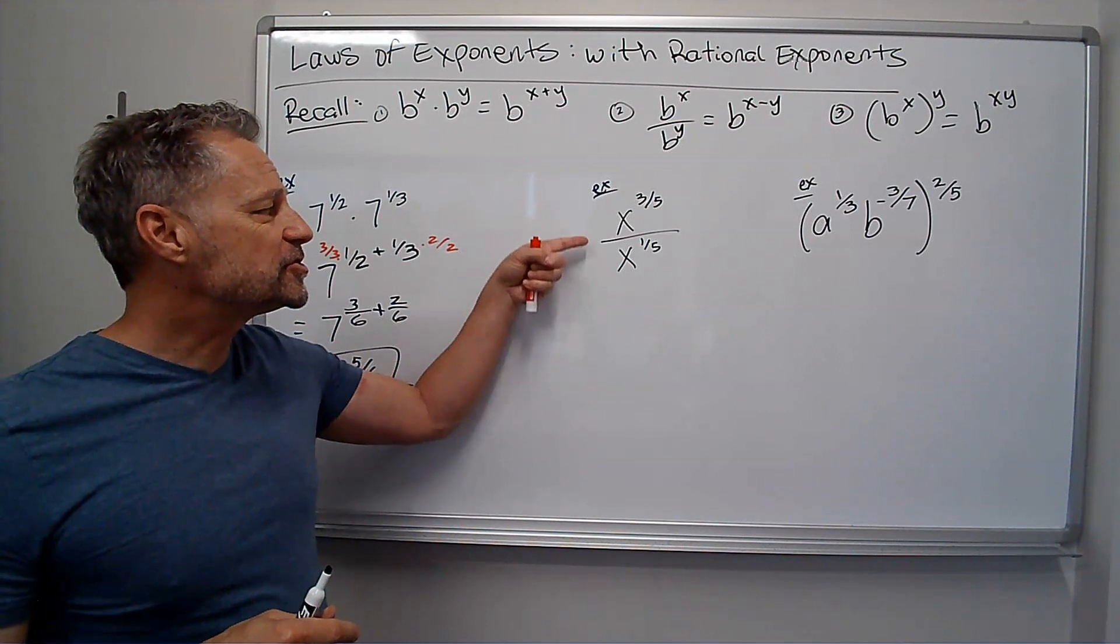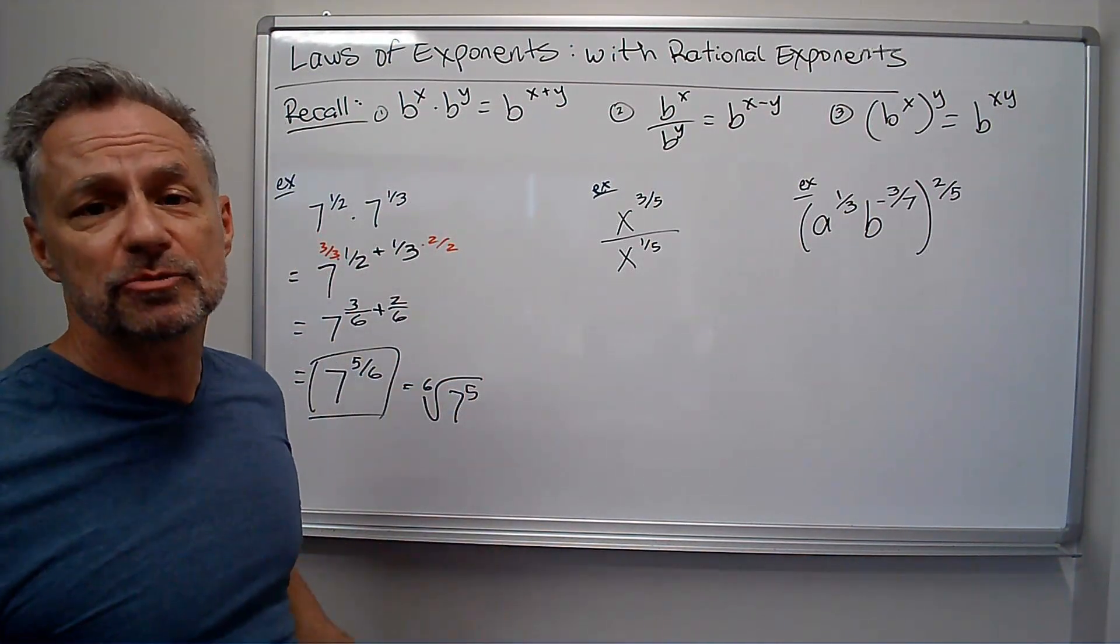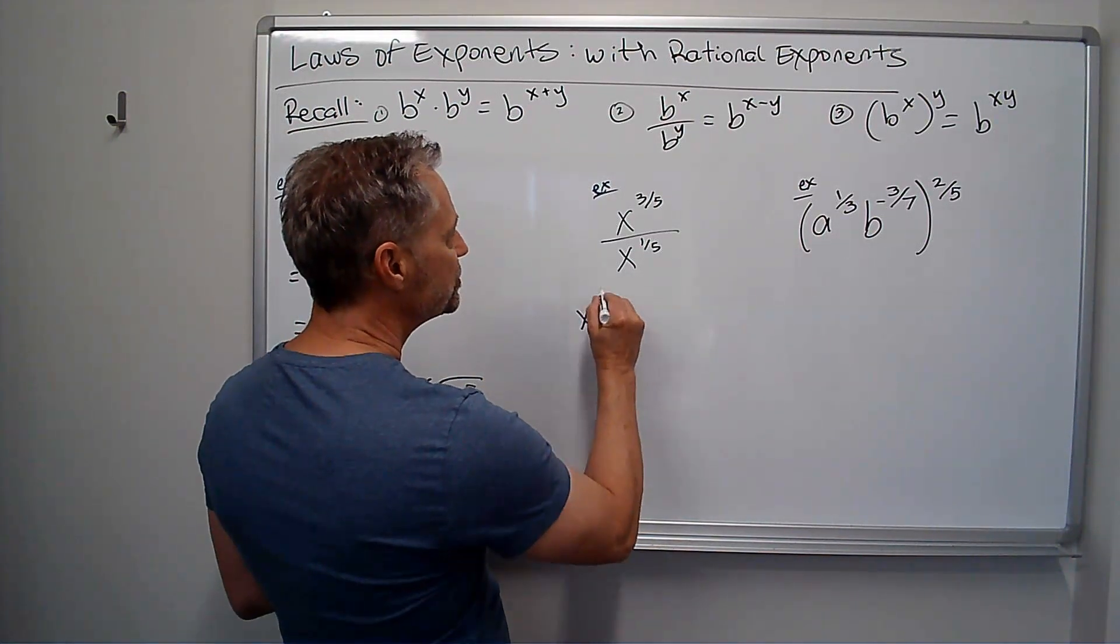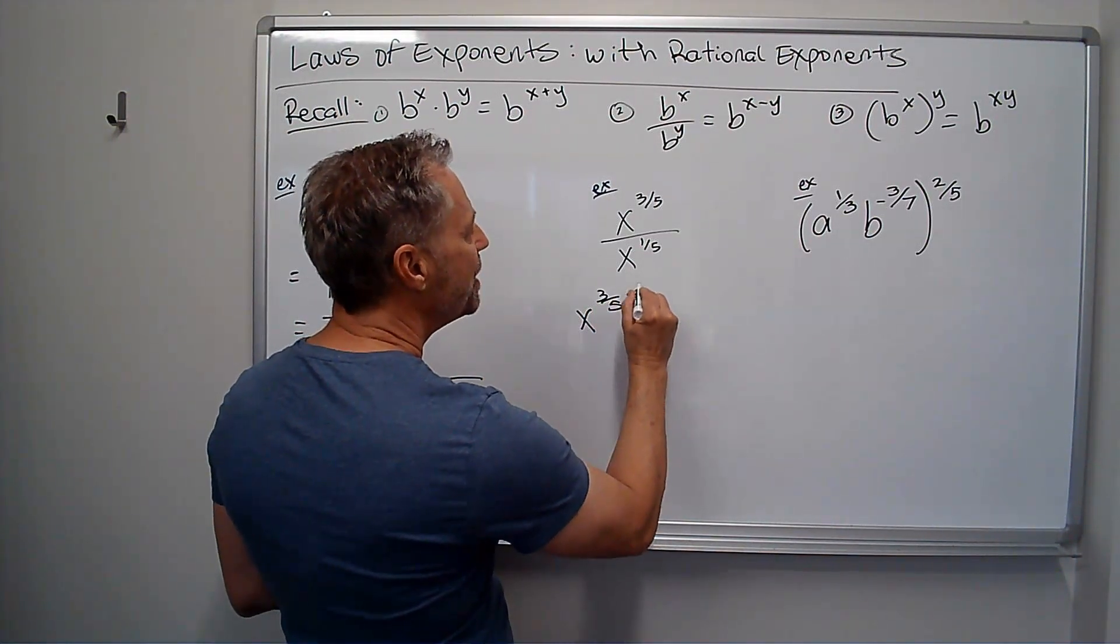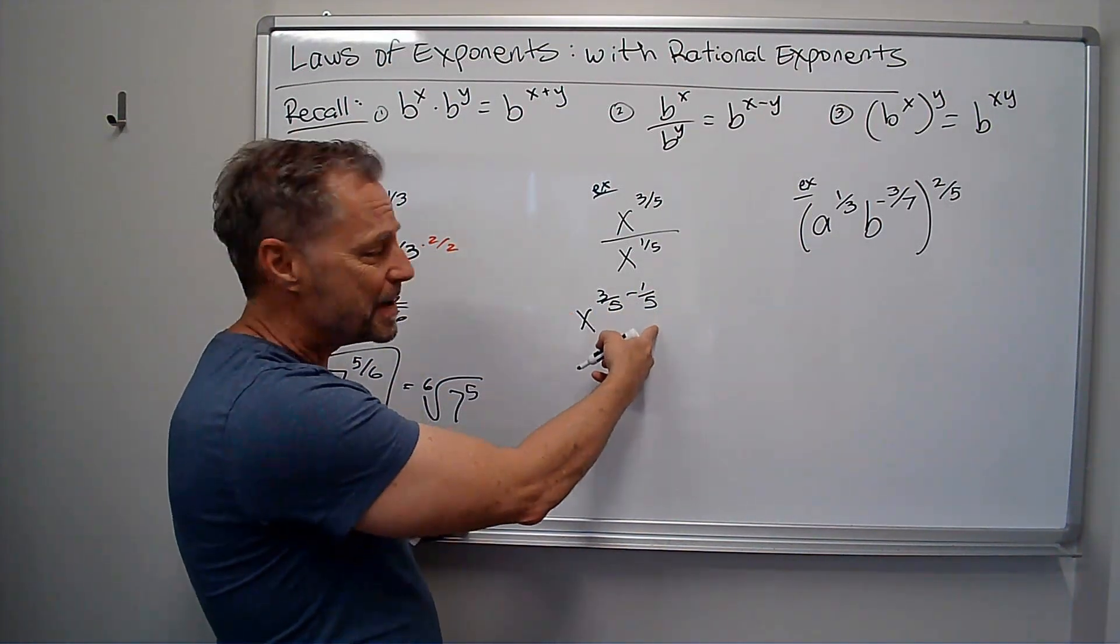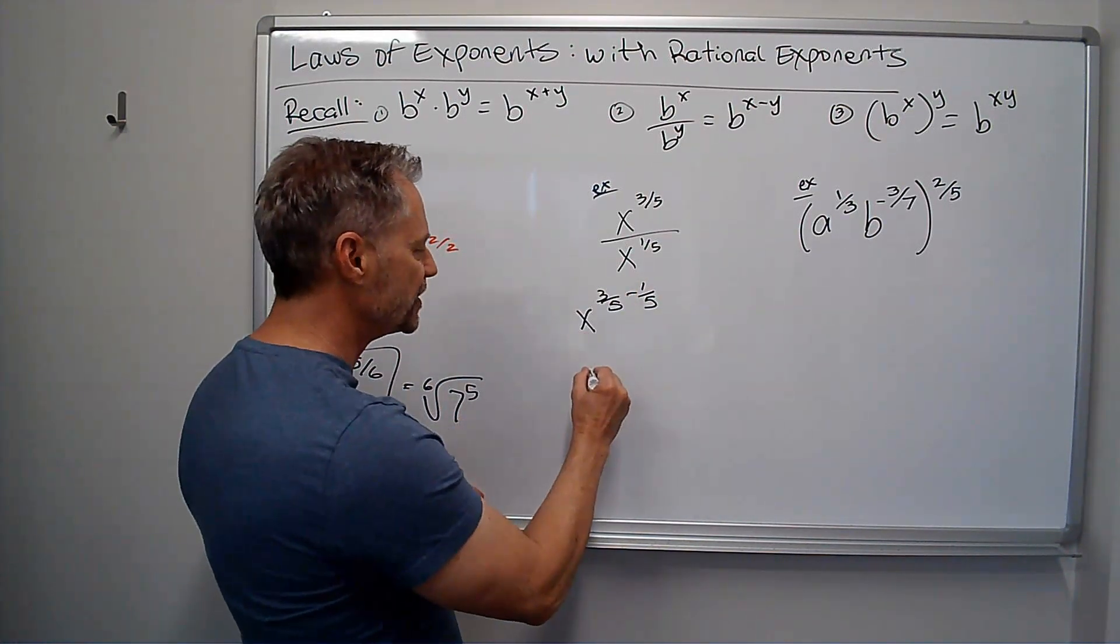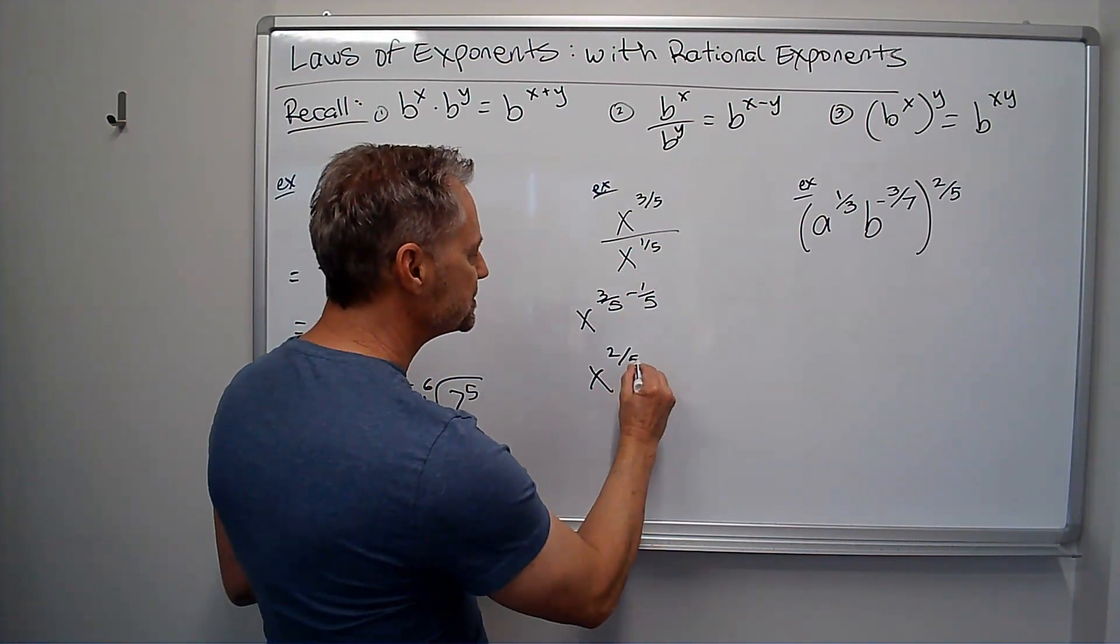Okay, now I've got two numbers with the same base. This time I'm dividing, so remember, I subtract the exponents. So this is just going to be x to the 3 halves minus 1 half. And then I already have the same denominator. So I'm going to just subtract the numerators. I get x to the 2 halves. And I'll just leave it like that. That's my answer.